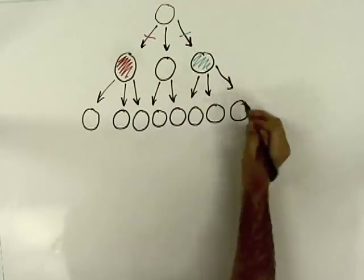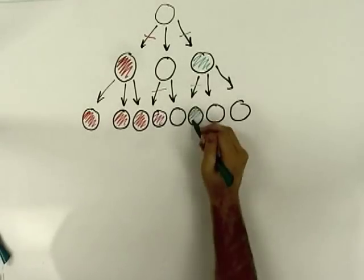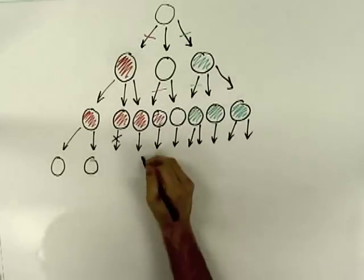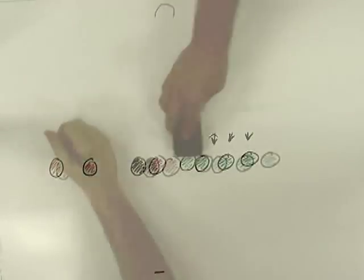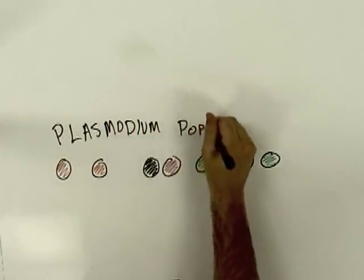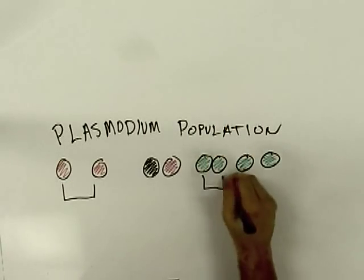As generations of plasmodium are passed between hosts and vectors, mutations develop, creating genetic diversity. By examining the diversity in a population, we can build an evolutionary tree of how plasmodium has evolved over time.